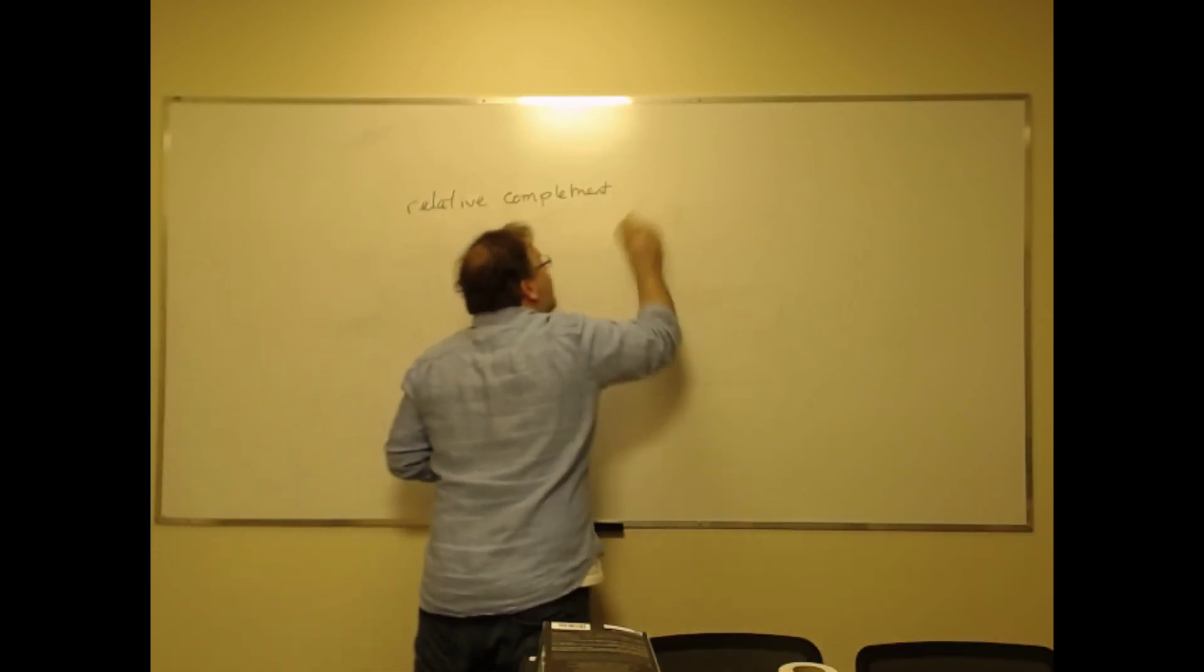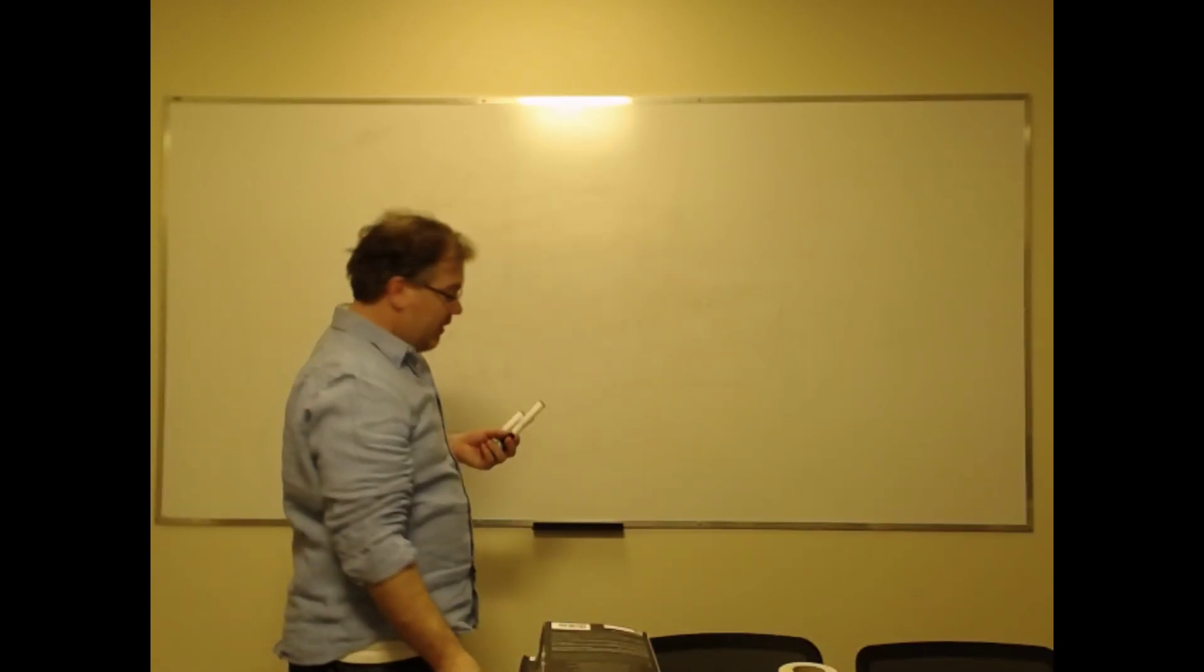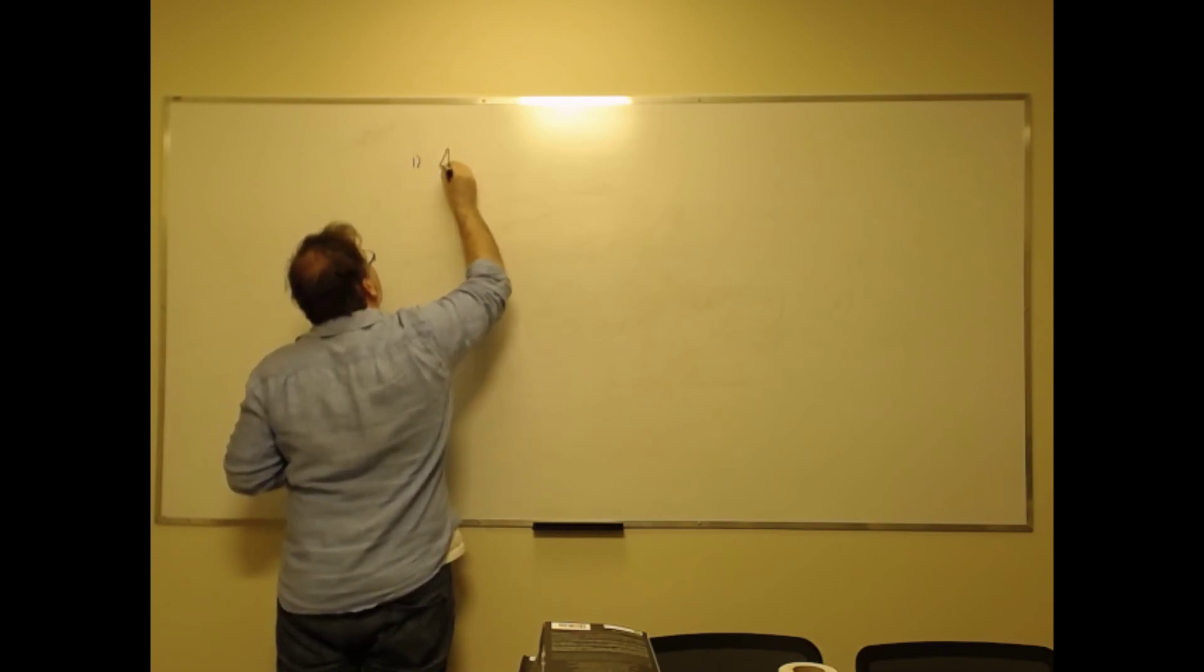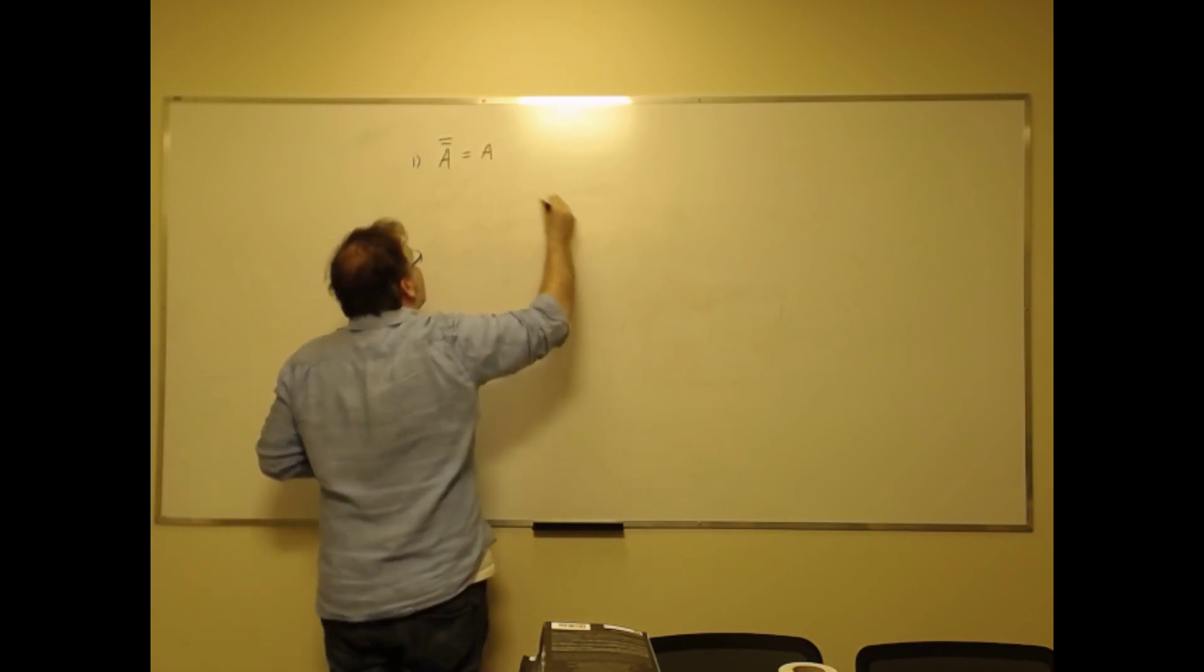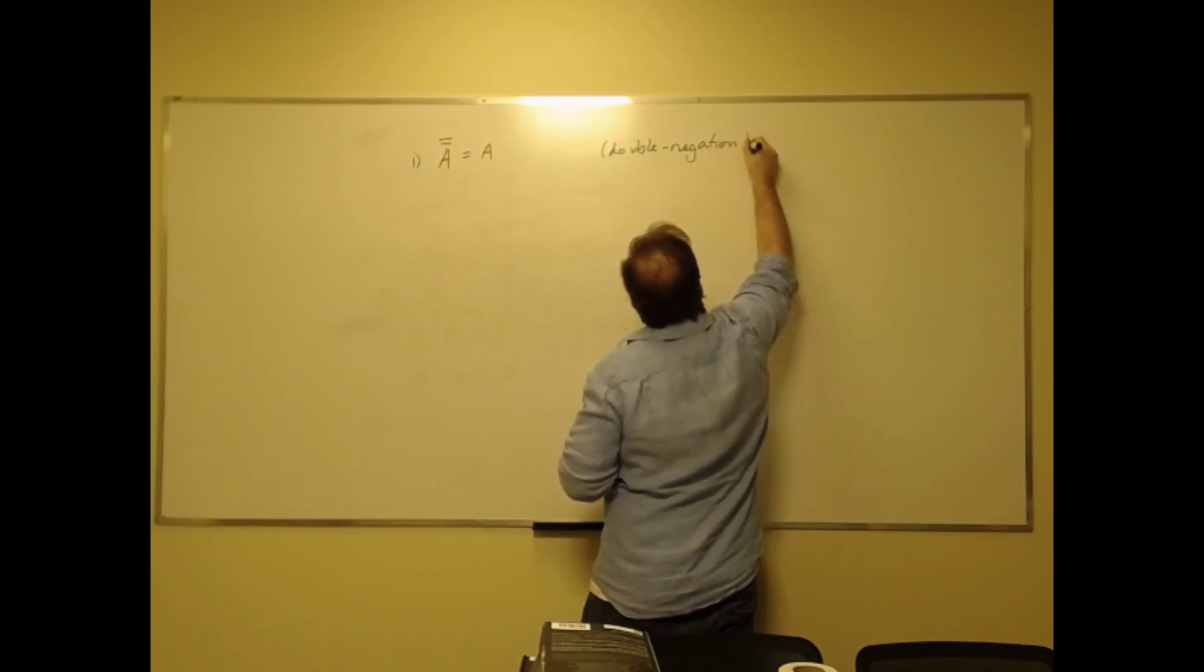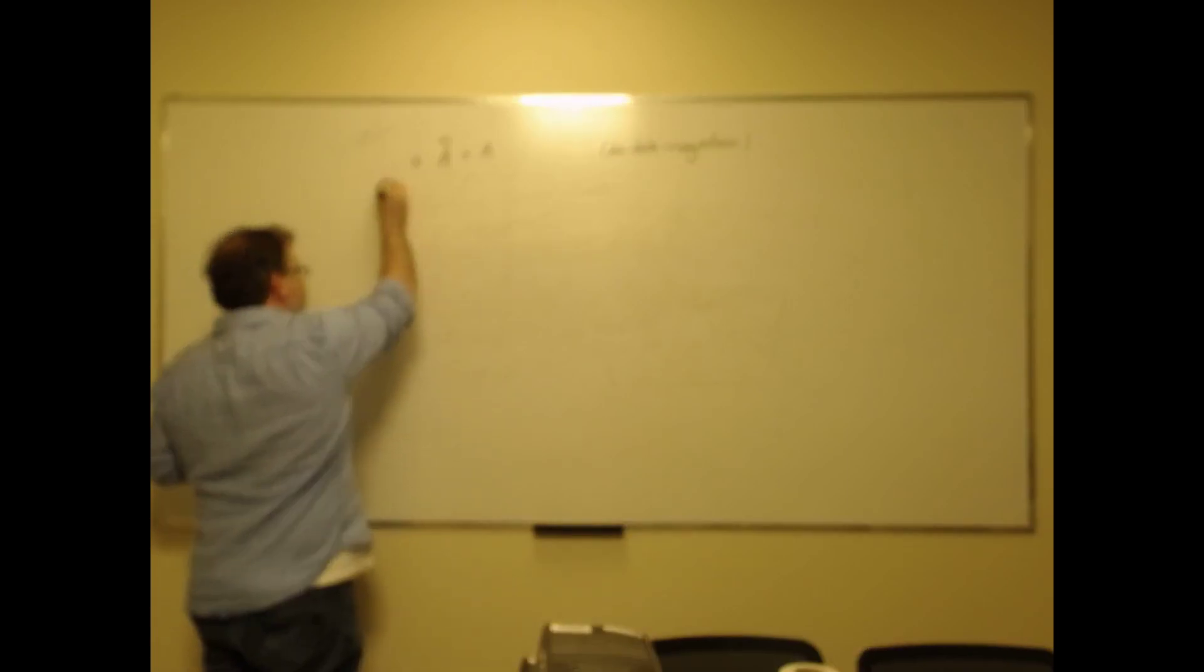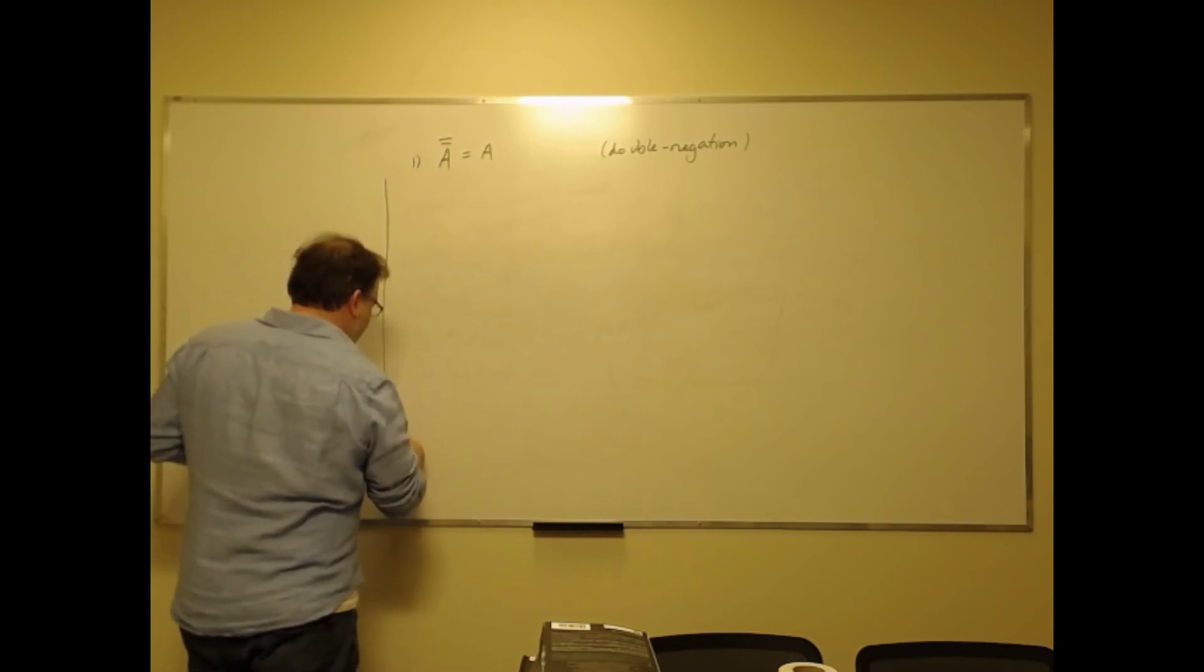The relative complement is tightly connected to the negation in sentential logic, so some of the properties you're going to recognize. So first property: the complement of the complement of A is just A. You know, that's like double negation. Should we try to prove that quickly? Let's try.